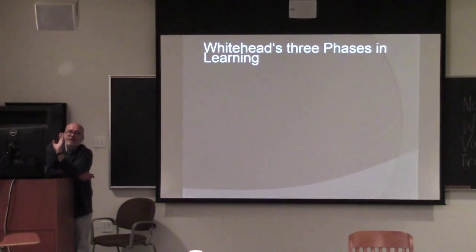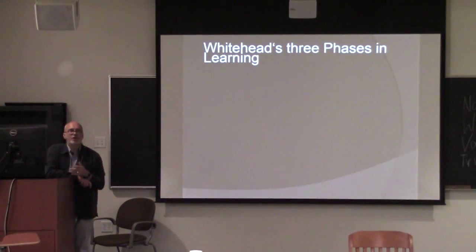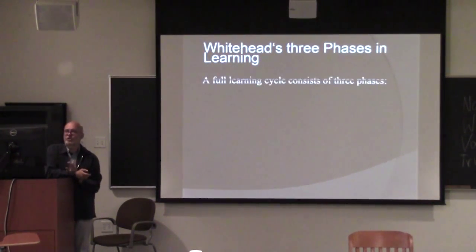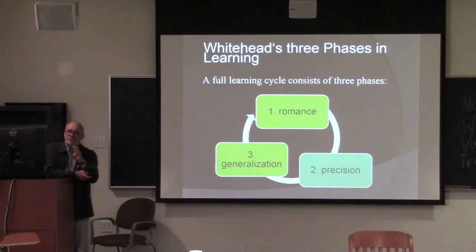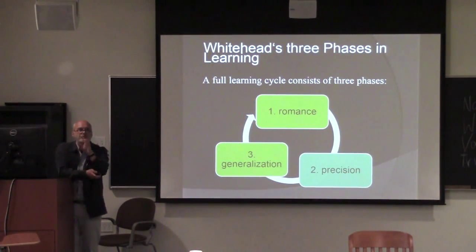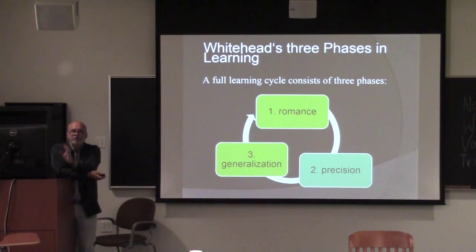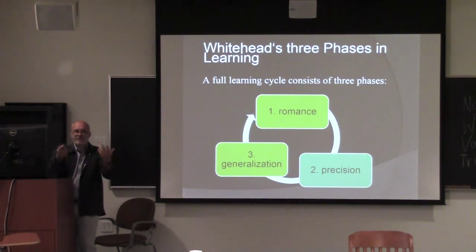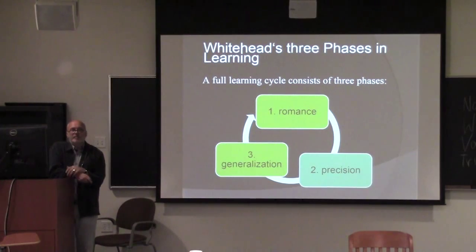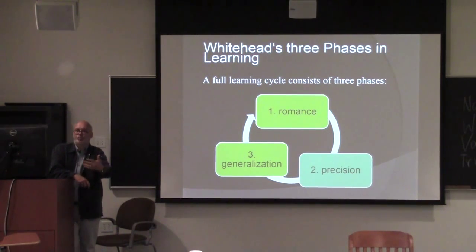I can presuppose that you all know Whitehead's learning cycles — romance, precision, and generalization. A full learning cycle according to Whitehead consists of three phases: romance, precision, and generalization. The new aspect is that romance always has to precede precision. In traditional learning, we only have precision. So in the romance phase, the student has every freedom to explore a task or a problem by bringing his own prior knowledge to the problem situation.